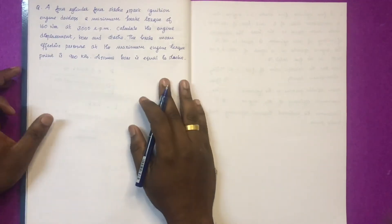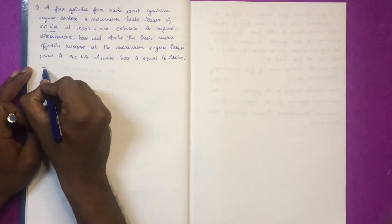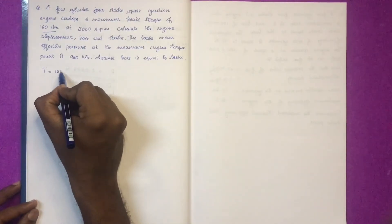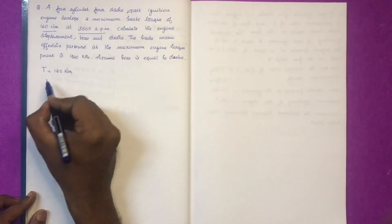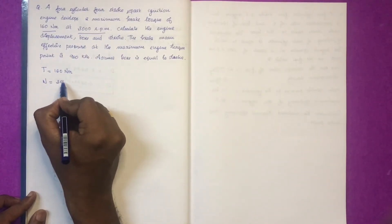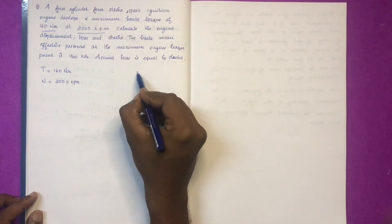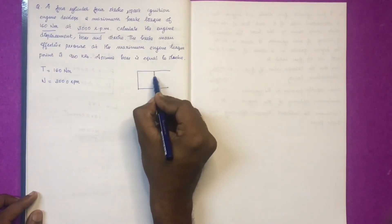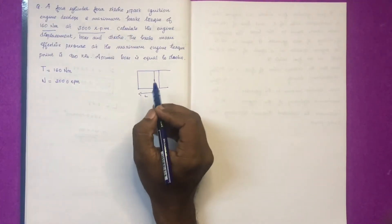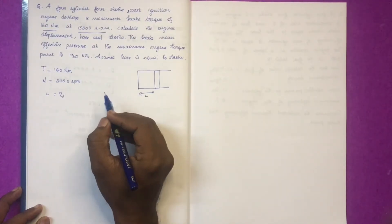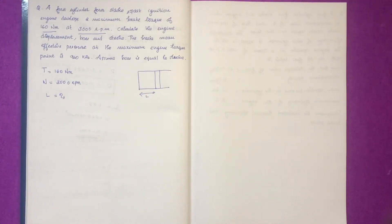A 4-stroke single-cylinder spark ignition engine develops a maximum brake torque of 160 Nm. N is equal to 3000 RPM. Calculate the engine displacement. Engine displacement is the piston displacement, which relates to stroke length, bore, and stroke.